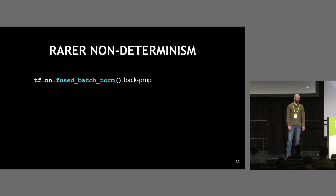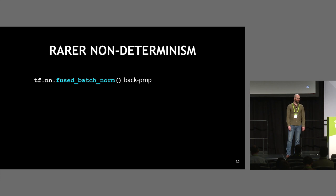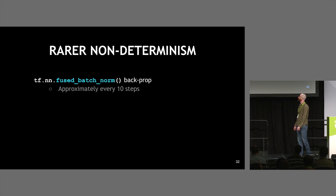With bias addition patched, that revealed more sources of non-determinism. Fused batch norm was non-deterministic — previously it was happening every single training step, now it's happening every 10 steps.